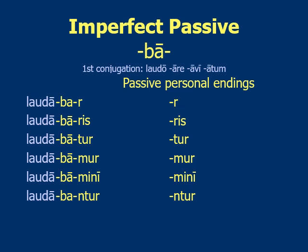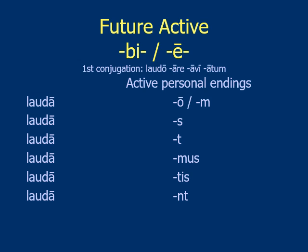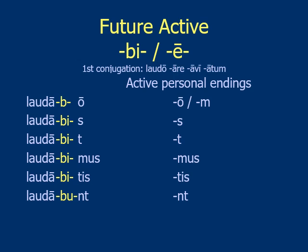The future uses -bi- or -be-, depending on the person. In the active voice, you take your stem from the second principal part, drop off the -re. You add either -bi- or -be- — mostly -bi- — but the first person singular is not -bio because it would add another sound and that doesn't sound good. Laudabio sounds terrible, so instead they say laudabo, dropping the -i-. All the rest have -bi-. The third person plural changes to -bu- because the -nt sound changes the -i- to a -u- sound when said fast. Then you add your endings: -o, -s, -t, -mus, -tis, -nt.